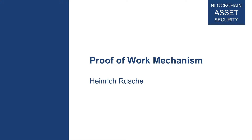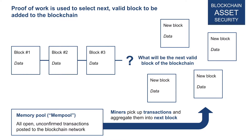This lecture focuses on the proof of work consensus mechanism. Before going into more detail, let's recap why there is a need for a consensus mechanism. The consensus mechanism fundamentally answers the question: what will be the next valid block of the blockchain? You have the blockchain, with all kinds of miners and open transactions — but who decides what the next block will be? Everybody in the network needs to understand and agree on this. Here is a stylized version of the blockchain — imagine blocks filled with transaction data from the past, and now the next block needs to be selected. A block is fundamentally a collection of transactions that have occurred.